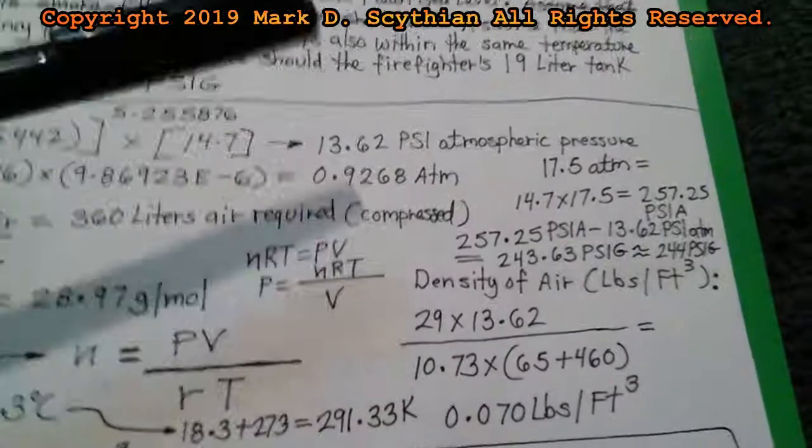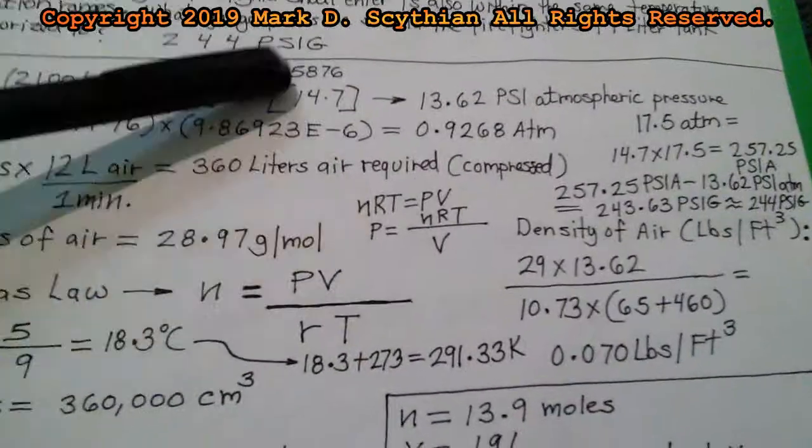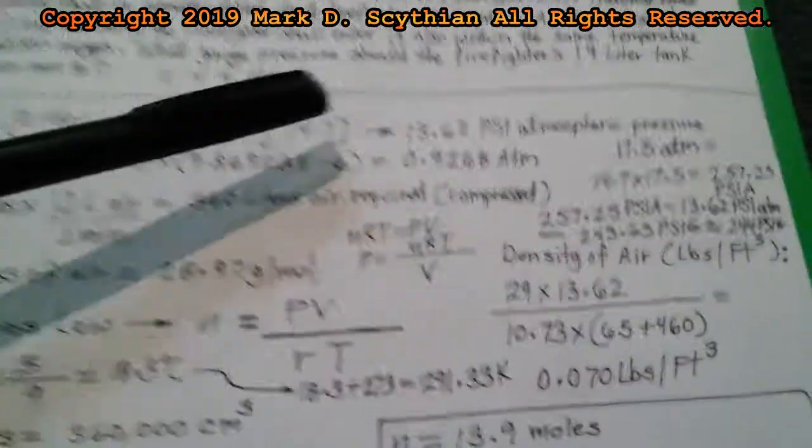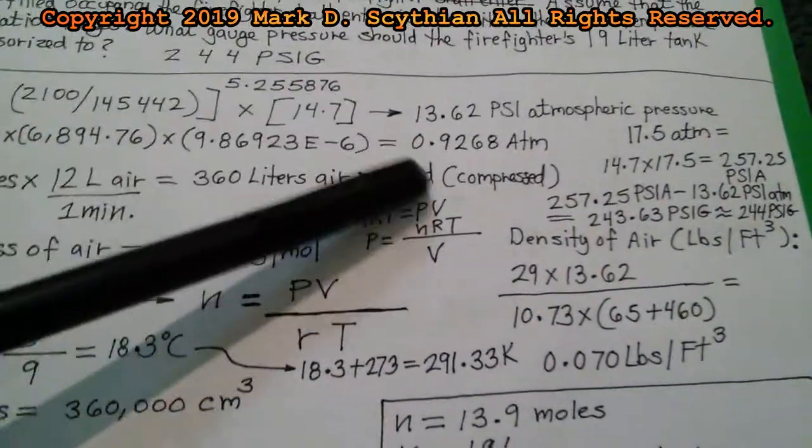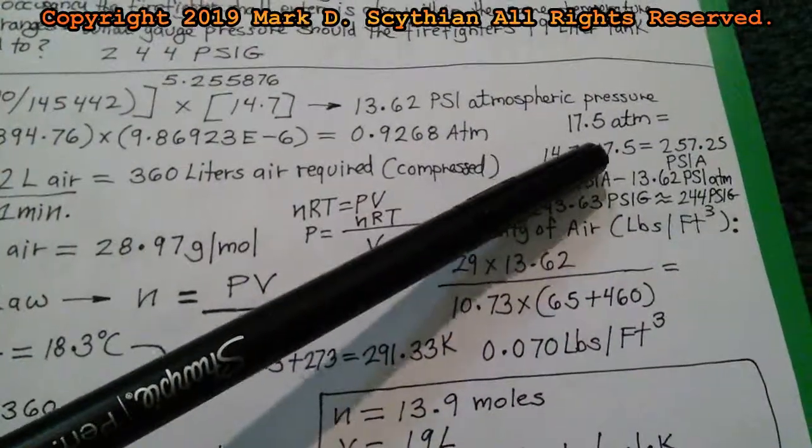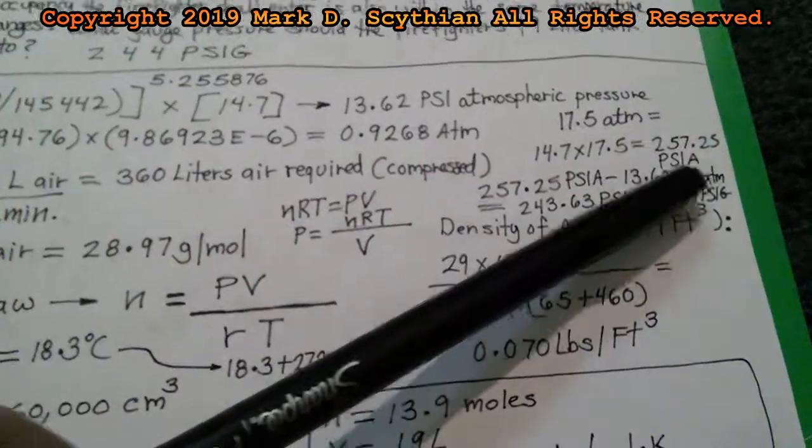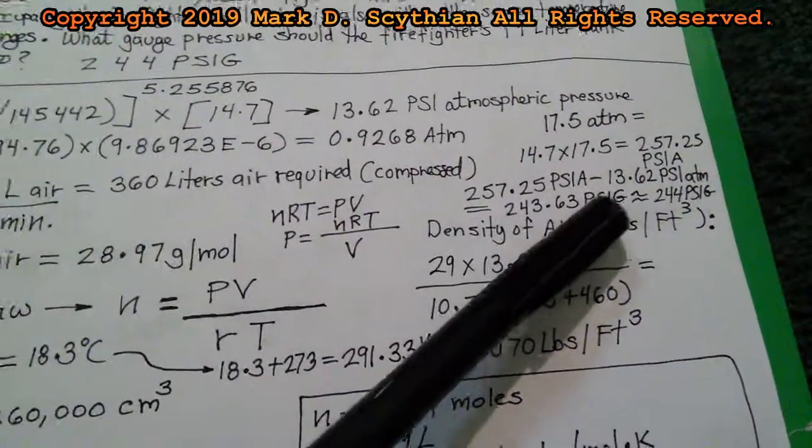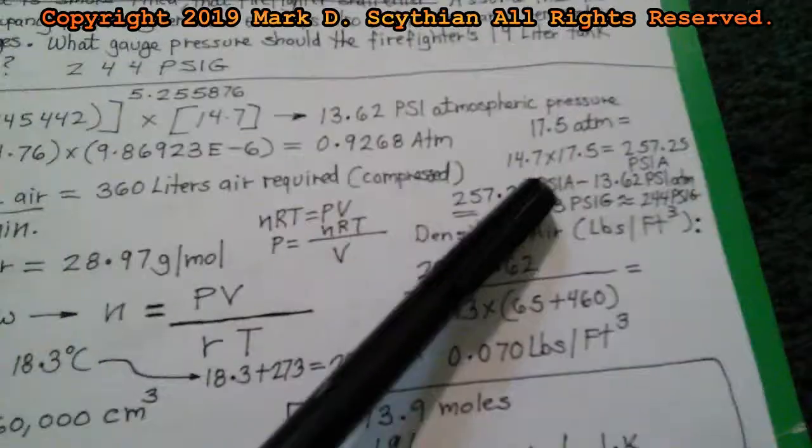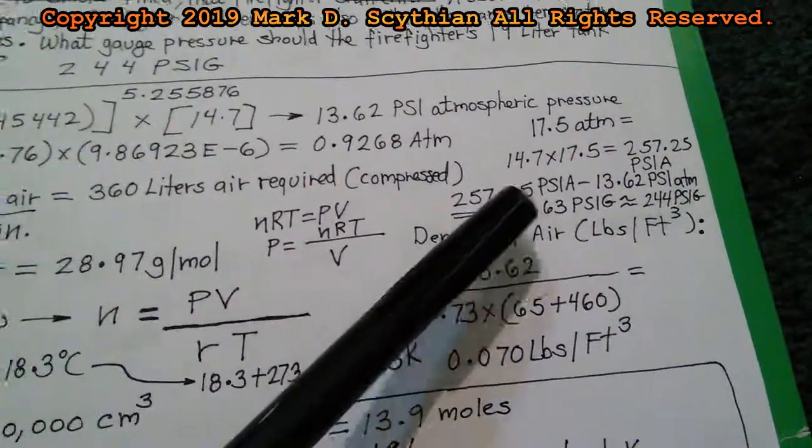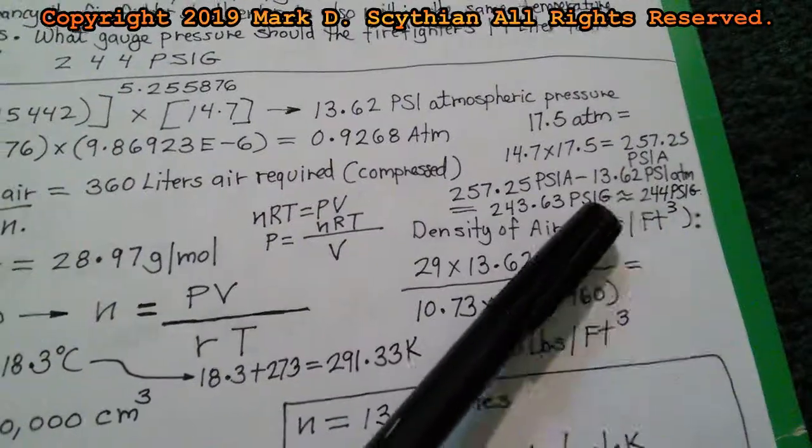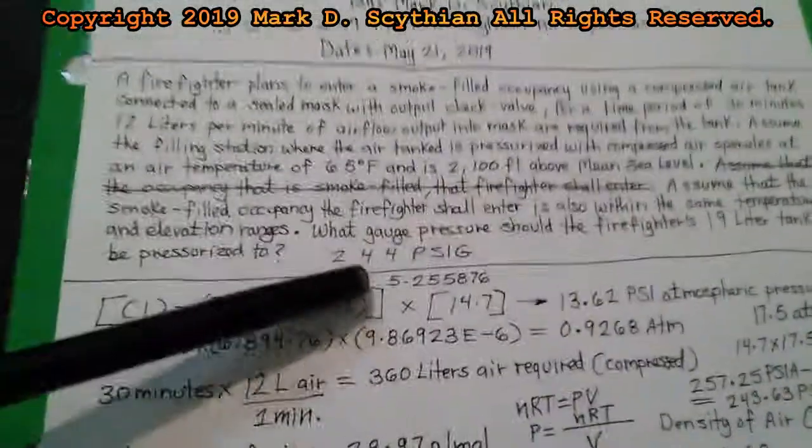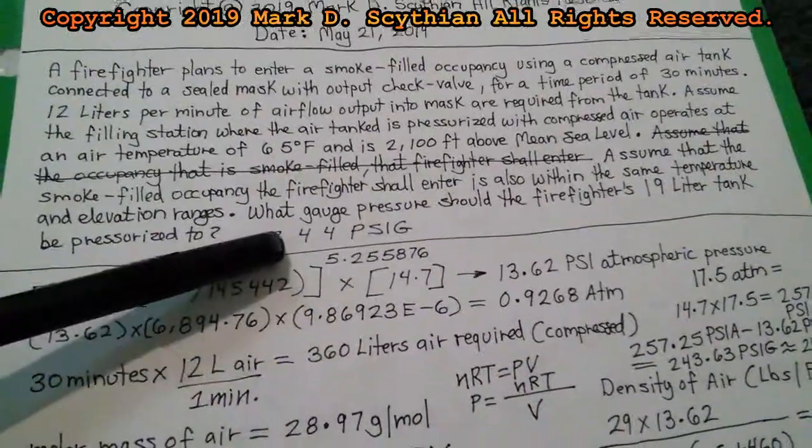We know that one ATM is 14.7 PSI in the U.S. English system of measure. We're dealing with PSI. We can take 14.7 times 17.5 ATMs, 257.25 PSI A. We subtract the atmospheric pressure from the absolute pressure to get gauge to 243.63 PSI G gauge. 244 we round it to. And this is what you would pressurize the air tank above atmospheric pressure.